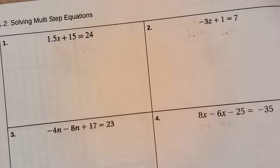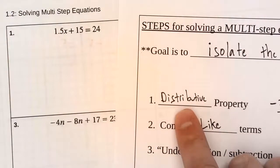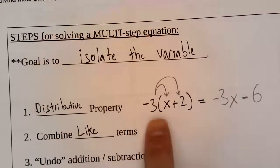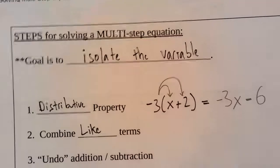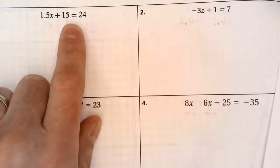Well the distributive property isn't going to apply because there's no parentheses by the way. This is what the distributive property would look like but that doesn't apply. Combine like terms, that doesn't apply either.